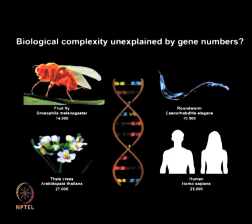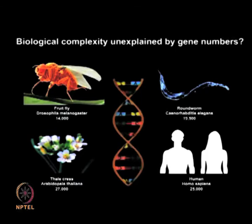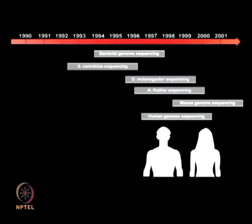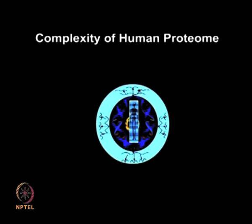The completion of genome sequencing projects of several organisms, including human, has been one of the most remarkable achievements of this century. However, these have not been sufficient to unravel the mystery of complex biological processes. The similar gene numbers of many diverse groups of organisms has failed to explain their varying biological complexity. A more meaningful understanding of biological function can be obtained through characterization of products of gene expression — the proteins which serve as ultimate effector molecules of biological systems. Proteomics refers to the study of the entire protein complement.